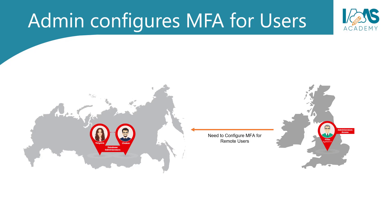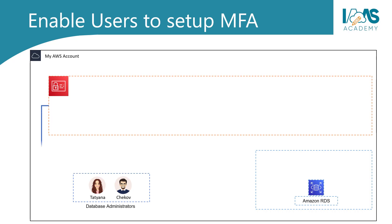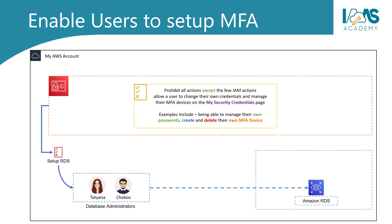For example, in our case with Vacant Studio, we have Tatiana and Chekhov who work remotely from Moscow, Russia. So for our lab exercise, rather than have Mike configure MFA for our database gurus, we can have Tatiana and Chekhov set up their own MFA devices before they can access the services they need. We do this by applying another policy to our database gurus which prohibits all actions except a few IAM actions that allow them to change their credentials and manage their own MFA devices on the My Security Credentials page. Only when Chekhov has set up MFA and logged in with his multi-factor authentication token will he be able to perform his duties on the AWS account.